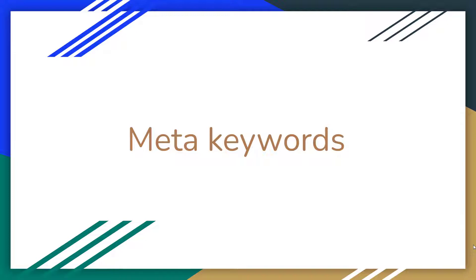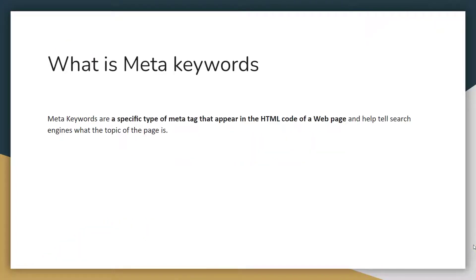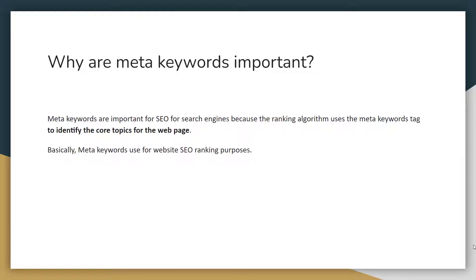First, we are going to know what is a meta keyword. Meta keywords are a specific type of meta tag that you put in the HTML code of a web page to help tell search engines what the topic of the page is. Meta keywords are important for SEO because the ranking algorithm uses the meta keyword tag to identify the core topics of a web page.